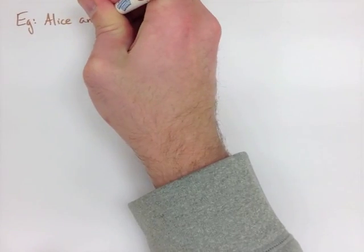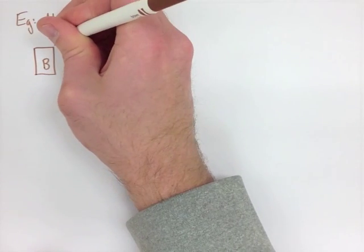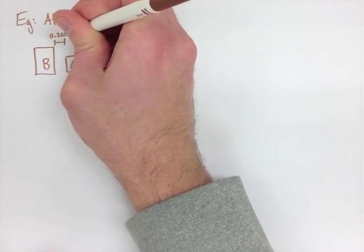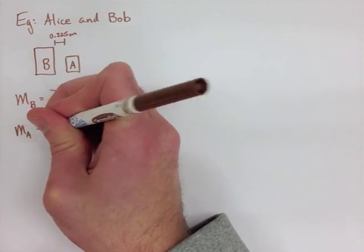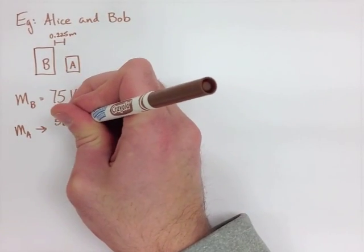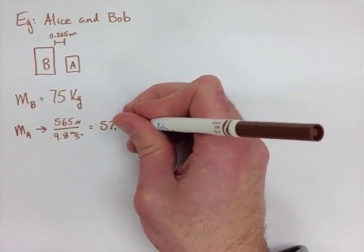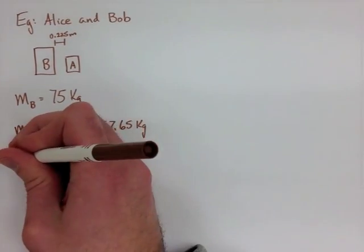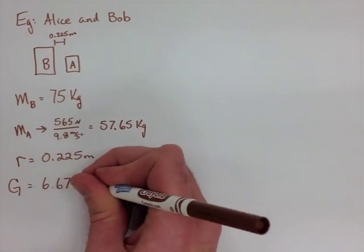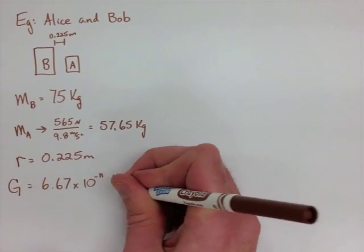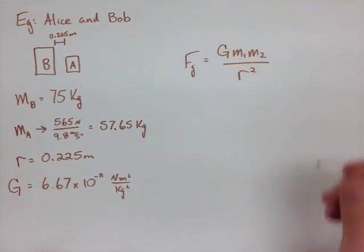Now, looking at the first example, we have Alice and Bob sitting beside each other. Alice has a weight, and remember we measure weight in Newtons, of 565 Newtons. Bob has a mass of 75 kilograms. For this equation, we need to do mass only. So Bob's mass is fine, but we need to convert Alice's mass by dividing her weight by 9.8. We find out that Alice's mass is 57.65 kilograms.